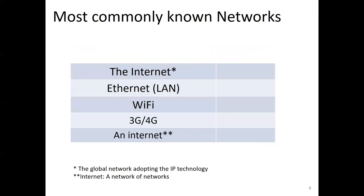Nowadays, the most commonly known networks are the internet, local area network, Wi-Fi, 3G or 4G, and the internet. The internet is a global network adopting IP technology, and in our case the internet is a network of networks.